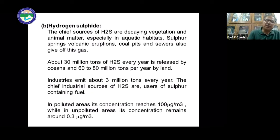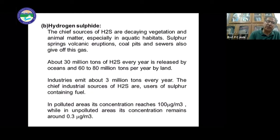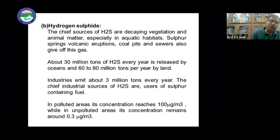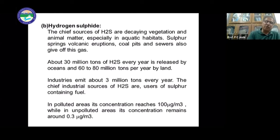About 30 million tons of hydrogen sulfide every year is released by oceans and 60 to 80 million tons per year by land. Industries release around 3 million tons every year. In polluted areas, its concentration can reach 100 micrograms per cubic meter, while in unpolluted areas it remains around 0.3 micrograms per cubic meter.